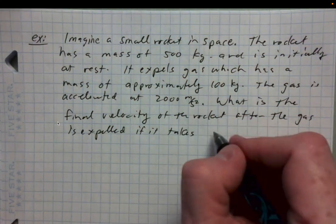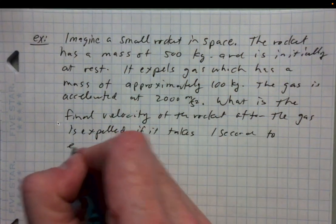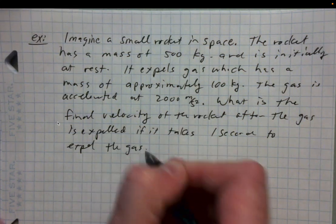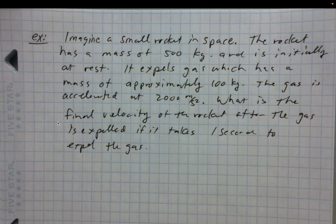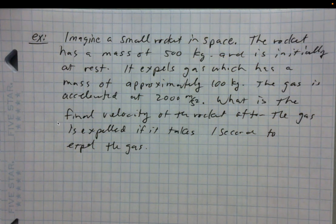It takes about 1 second to expel the gas — so it's near-instantaneous. In that 1 second, all 100 kilograms of gas has been accelerated at 2,000 meters per second squared out the back of the rocket.